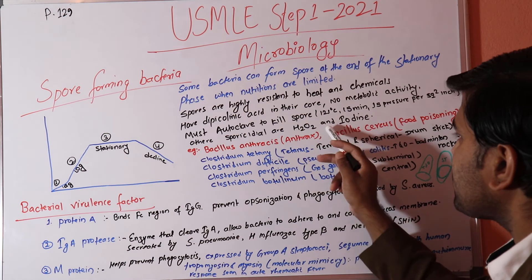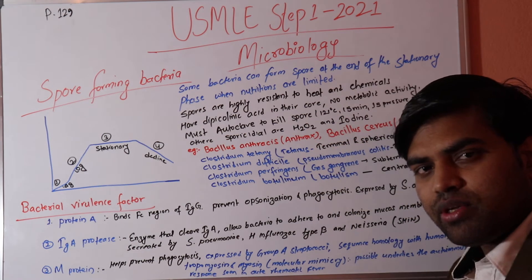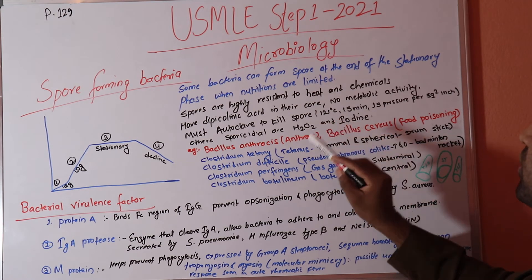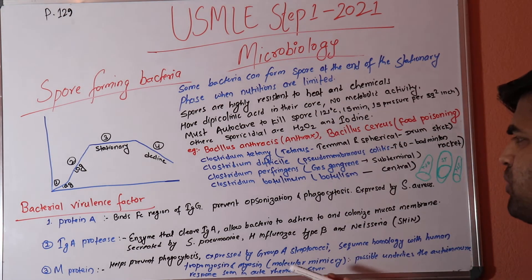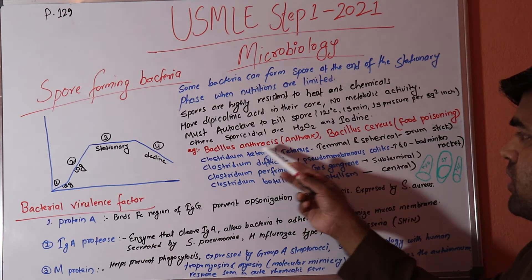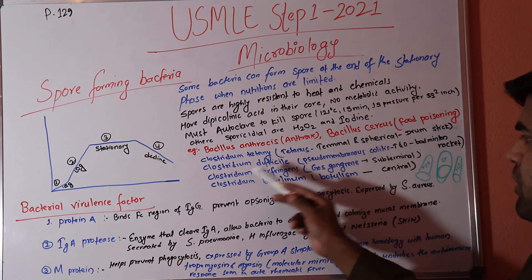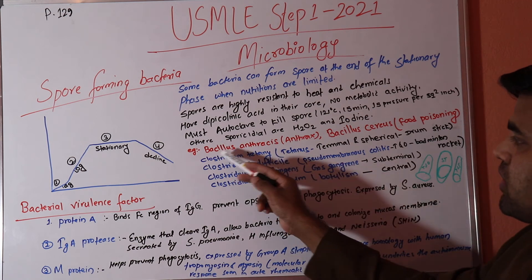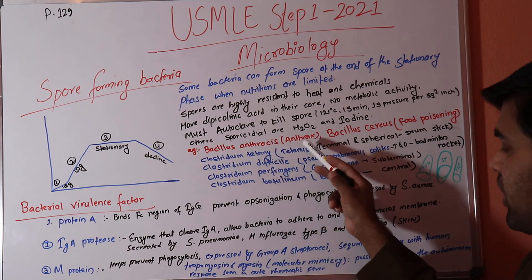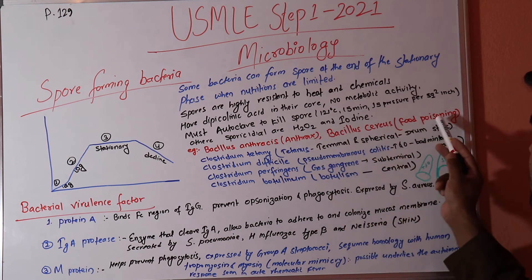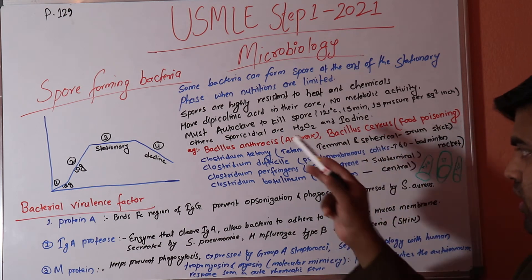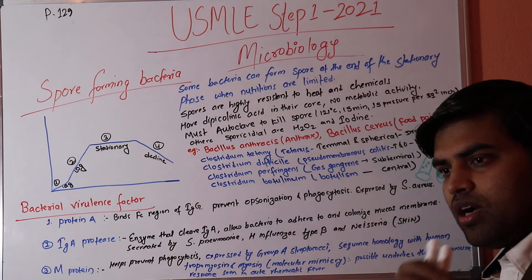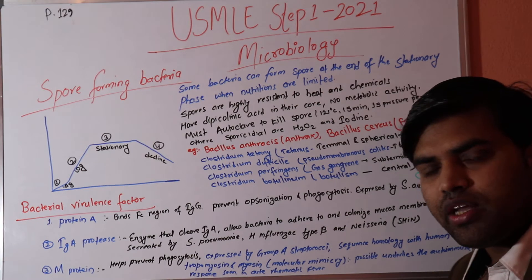Other chemicals that can kill spores are hydrogen peroxide and iodine. The spore-forming organisms include: Bacillus anthracis, Bacillus cereus, Clostridium tetani, Clostridium difficile, Clostridium perfringens, and Clostridium botulinum. Bacillus anthracis causes anthrax and Bacillus cereus causes food poisoning.